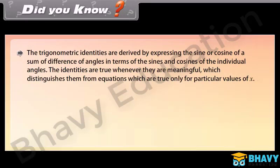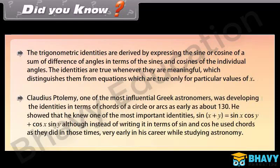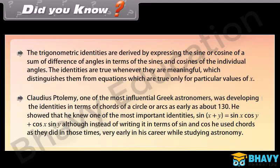Did you know? Trigonometric identities are derived by expressing the sine or cosine of a sum or difference of angles in terms of the sines and cosines of the individual angles. The identities are true whenever they are meaningful, which distinguishes them from equations that are true only for particular values of x. Claudius Ptolemy, one of the most influential Greek astronomers, was developing identities in terms of chords of a circle as early as about 130 AD. He showed he knew one of the most important identities: sin(x + y) = sin x · cos y + cos x · sin y, though he expressed it using chords rather than sines and cosines.